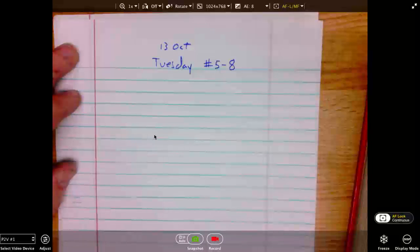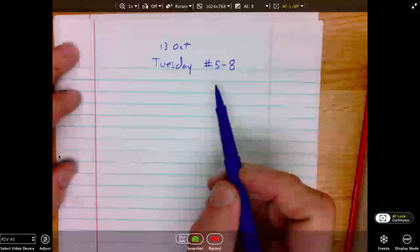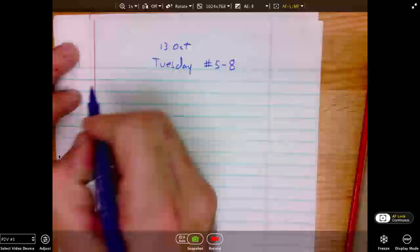We will be looking at the warm-up problems for Tuesday through Thursday. The first set we'll look at is Tuesday, 13 of October. These problems are numbers 5 through 8. We will be looking at numbers 6 and 8.